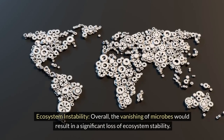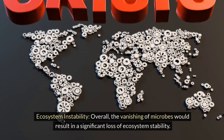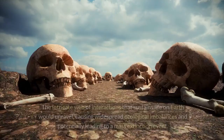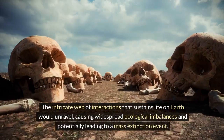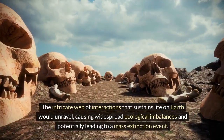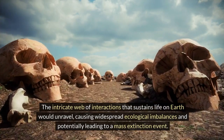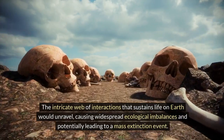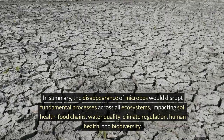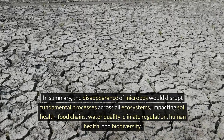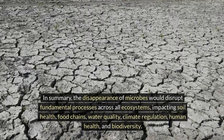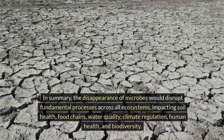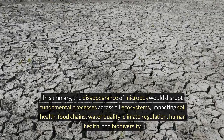Ecosystem instability: overall, the vanishing of microbes would result in a significant loss of ecosystem stability. The intricate web of interactions that sustains life on Earth would unravel, causing widespread ecological imbalances and potentially leading to a mass extinction event. In summary, the disappearance of microbes would disrupt fundamental processes across all ecosystems, impacting soil health, food chains, water quality, climate regulation, human health, and biodiversity.